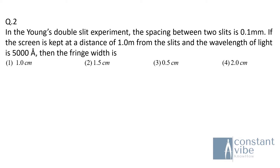Question 2: In Young's double slit experiment, the spacing between two slits is 0.1 mm. If the screen is kept at a distance of 1 m from the slits and the wavelength of light is 5000 Ångström, then the fringe width is — and the answer is option 3.